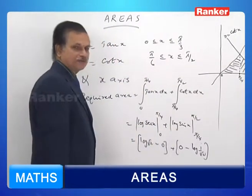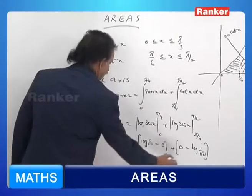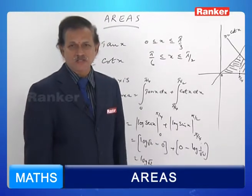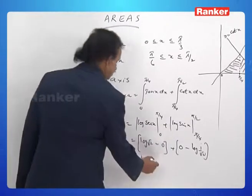Therefore this is log root 2. You can write log 1 by root 2 as minus log root 2. So minus log 1 by root 2 is minus of minus log root 2. Hence it is plus log root 2.